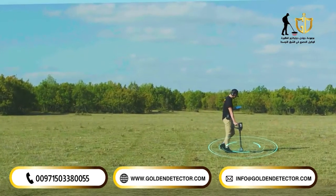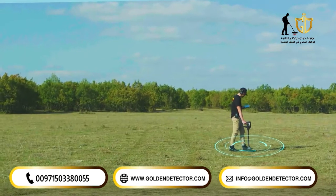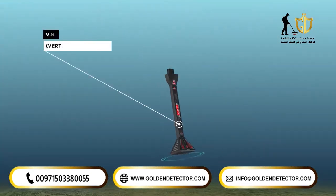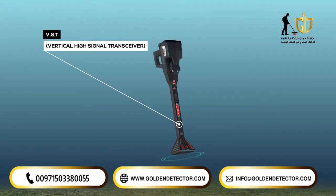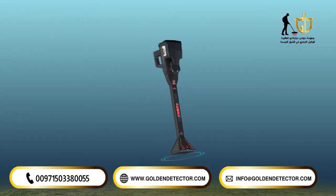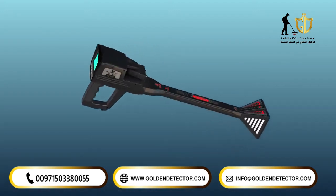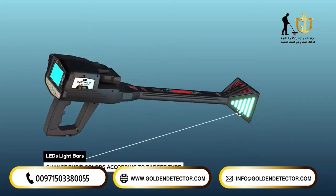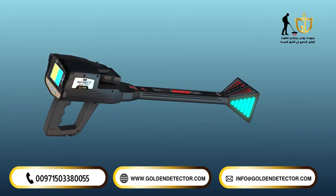The signal measurement process, or the scanning process, is done by the VST — Vertical High Signal Transceiver Unit — which is a probe at the end of which there is a quadrilateral cone on both sides, and bars consisting of many light-emitting diodes (LEDs) that change their colors according to target type, depending on the target that the VST probe is passing over.